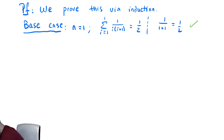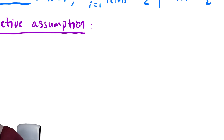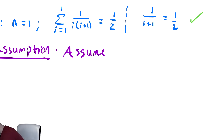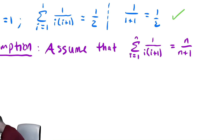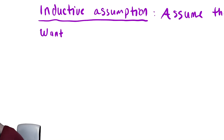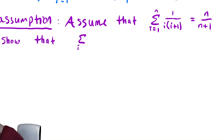We now must make our inductive assumption. We assume that the formula holds for n: the sum from i equals 1 to n of 1 over i times i plus 1 is equal to n divided by n plus 1. We then want to show that the sum from i equals 1 to n plus 1 of 1 divided by i times i plus 1 is equal to n plus 1 divided by n plus 1 plus 1, which is n plus 2.